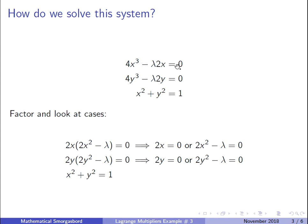Looking at the first equation, when we factor it we get 2x(2x² − λ) = 0. When you have something times something equals 0, one of the factors must equal 0, so the cases are: 2x = 0 or 2x² − λ = 0. For the other equation, we factor similarly and get 2y(2y² − λ) = 0, so either 2y = 0 or 2y² − λ = 0. We only need one factor from each equation to be zero for a valid solution.